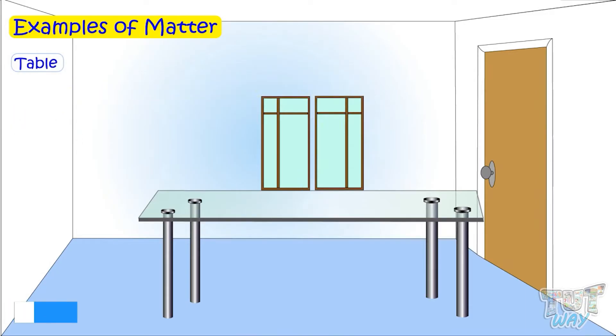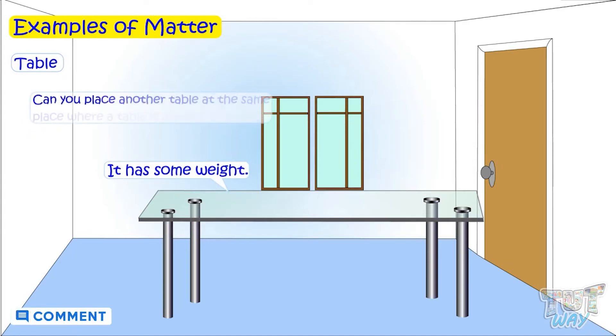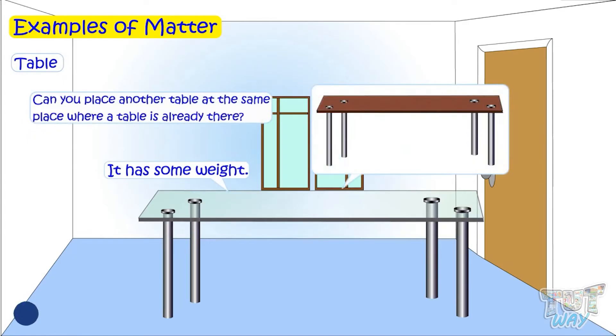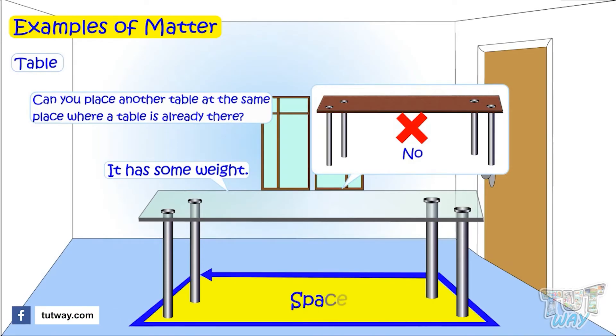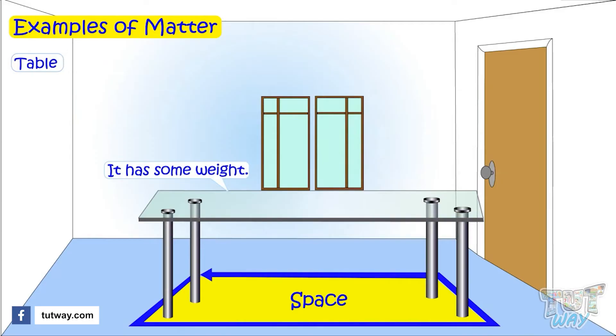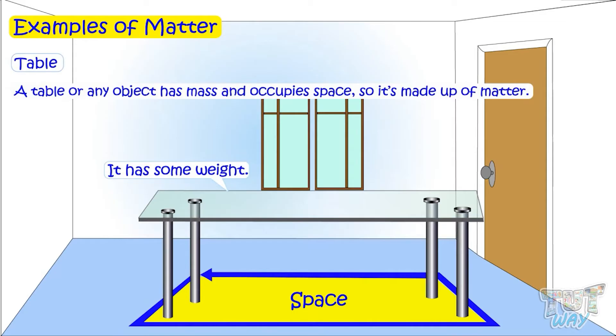Weigh the table. It has weight. Now, can you place another table at the same place where a table is already there? No, you cannot. So table occupies space. So table or any solid object has mass and occupies space. So it is made up of matter.